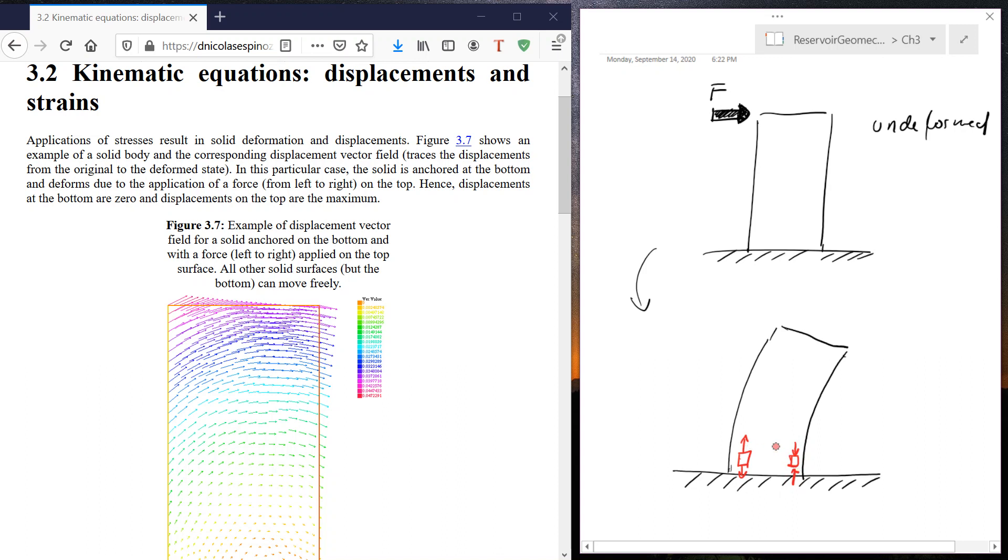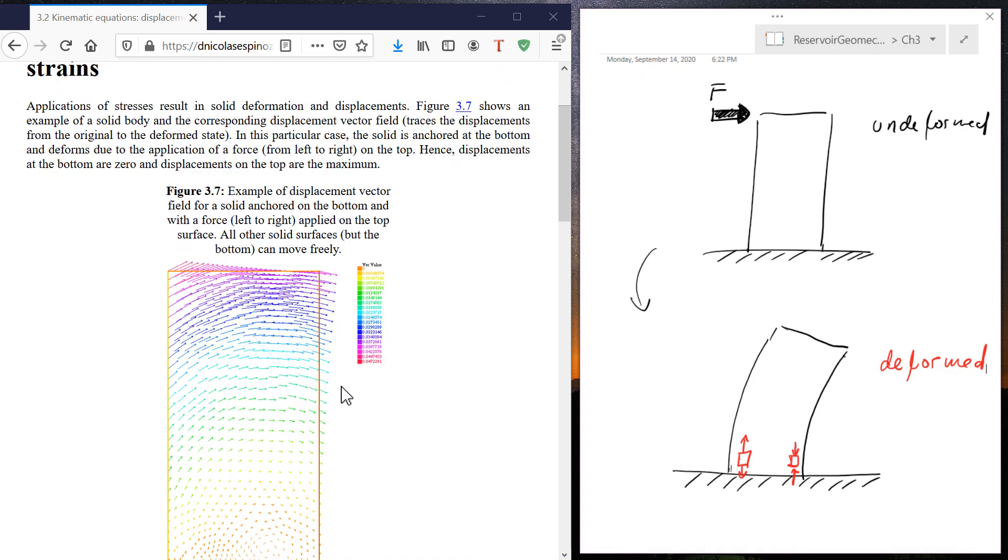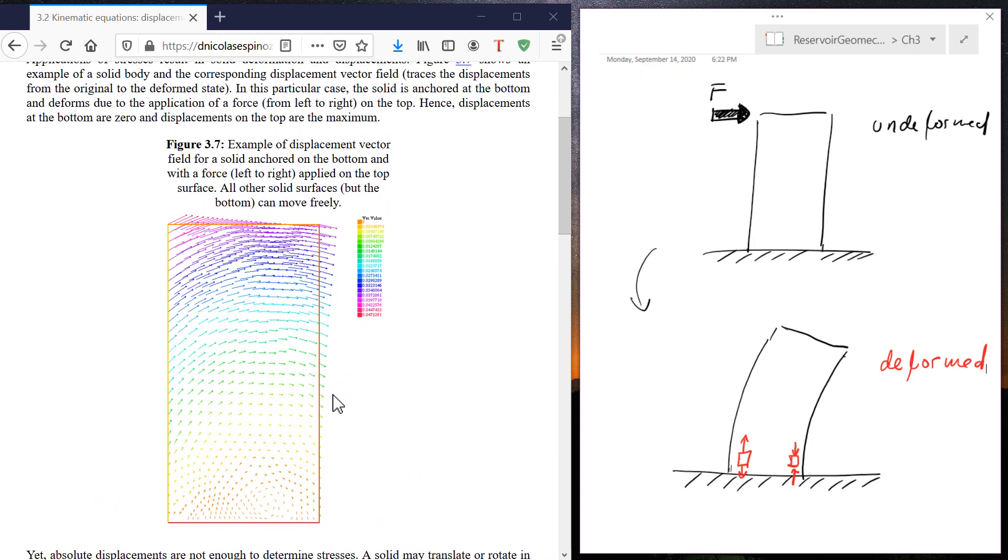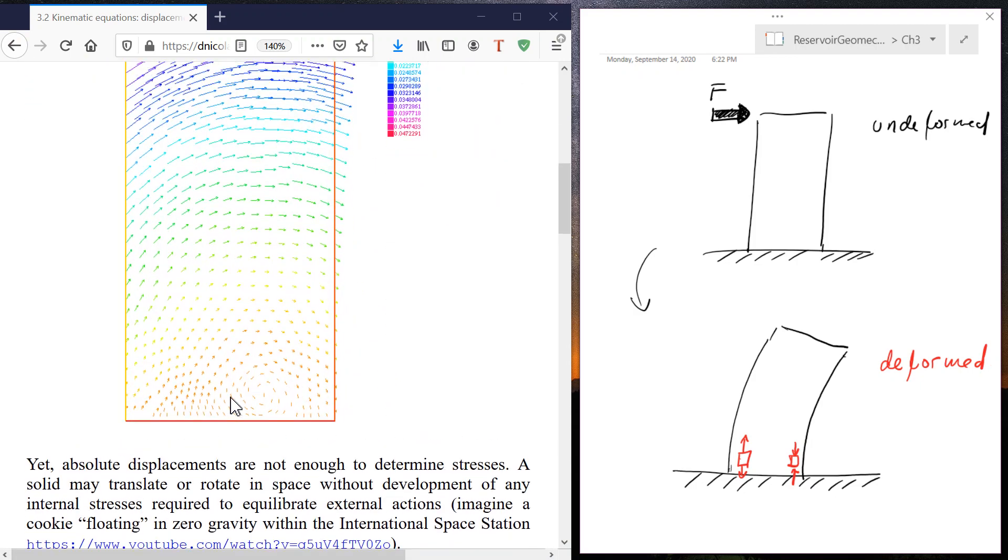How you calculate that stretching and that contraction is going to be done with what we know as the kinematic equations. And this is the plot that you have here on the left, which is actually a numerical solution of the problem I mentioned before. And what you can see with the arrows are what are called the displacement vectors.